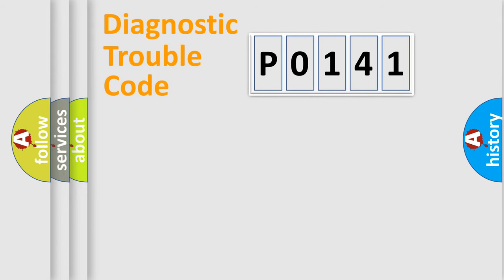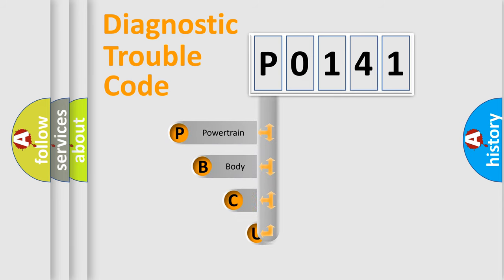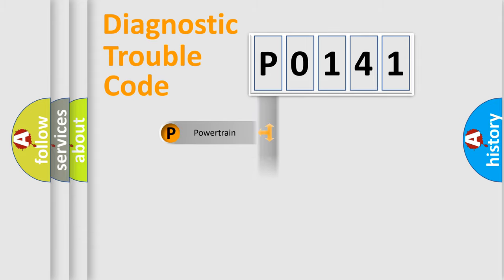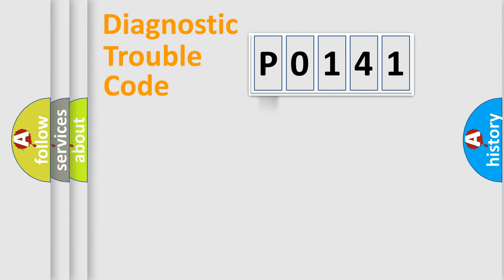Let's do this. First, let's look at the history of diagnostic fault code composition according to the OBD2 protocol, which is unified for all automakers since 2000. We divide the electric system of the automobile into four basic units: Powertrain, Body, Chassis, and Network.